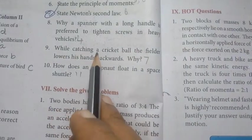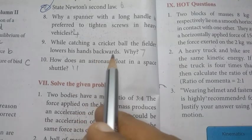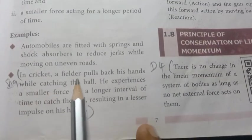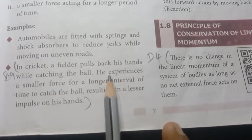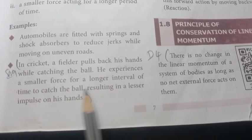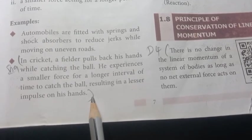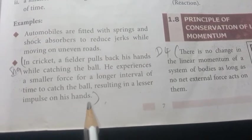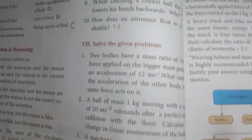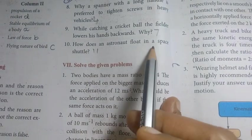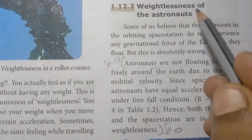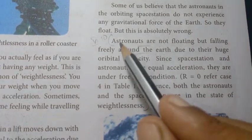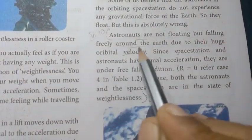Ninth: while catching a cricket ball, the fielder lowers his hands backwards. A fielder pulls back his hands while catching the ball, experiencing a smaller force for a longer interval of time, resulting in a lesser impulse on his hands. Tenth: how does an astronaut float in a space shuttle? Astronauts are not floating, but falling freely around the earth — this is the concept of weightlessness.